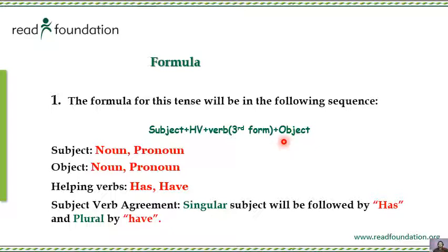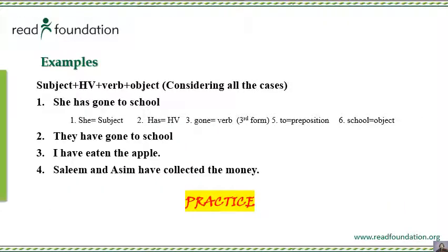After the verb, there is the object. You use the verb as it is. If you have a singular noun — that is, one person's name — you will use 'has' with it. If there are two or more subjects, you will use 'have' with them.